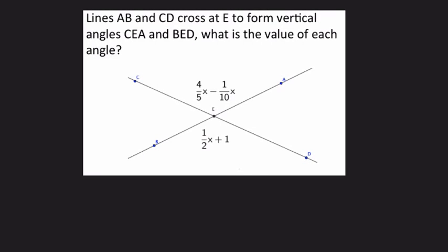Here they tell us that lines AB and CD cross at E to form vertical angles CEA, that's this angle right here, and BED, that's this angle right here. What is the value of each angle?